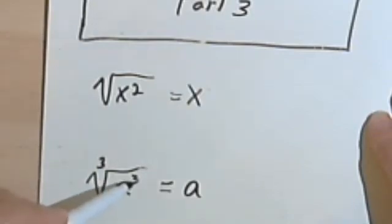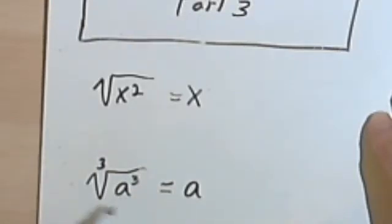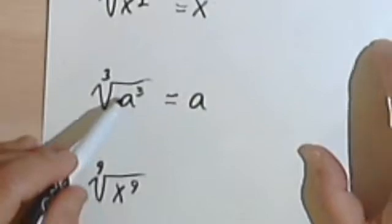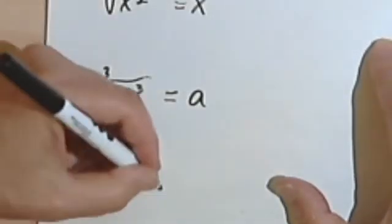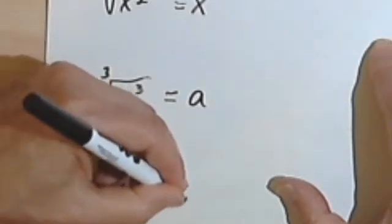If this index and this exponent are the same, basically all you're going to have when you solve the square root, or solve the radical, is going to be whatever the variable is here. Here's another one. So this is the 9th root of x to the 9th. Well, that's just going to be x.